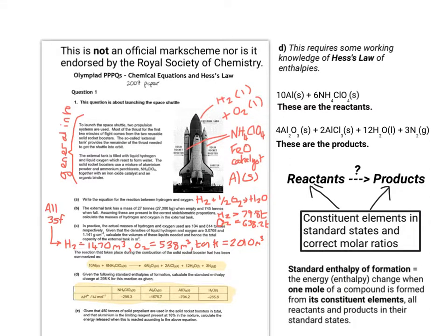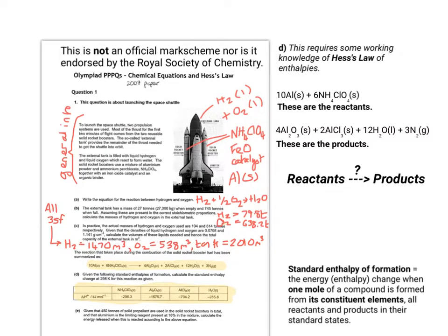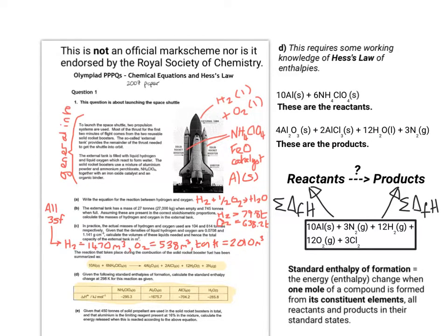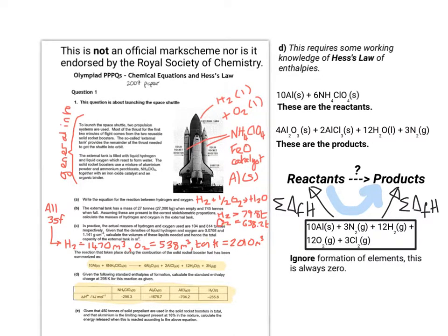Remembering the definition for standard enthalpy of formation, we've got to put in the constituent elements in their correct molar ratios and in their correct standard states. Making sure I'm putting the gas in as the standard state for chlorine, now we can do the calculation. To do this, we need to work out the route we're going to take. The route from reactants to products has to take into account the total enthalpy of formation of the reactants and products, but going from left to right. Ignoring the formation of elements, this is always zero. Now we can ignore the elements and just look at the compounds.